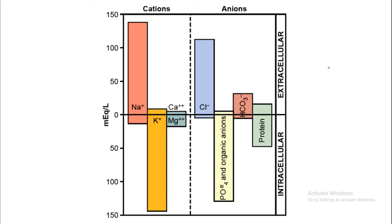Regarding ions in each compartment: in the extracellular fluid, higher amounts of sodium and chloride ions are present. In the intracellular fluid, higher amounts of potassium ions are present, as well as phosphate and organic anions. These are the major cations and anions distributed between the extracellular and intracellular compartments.